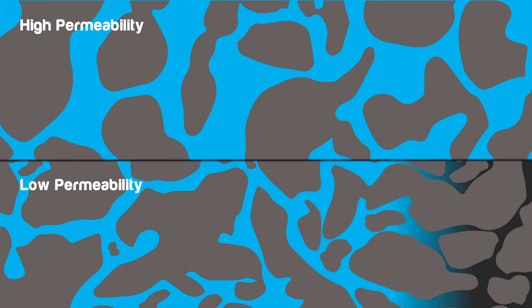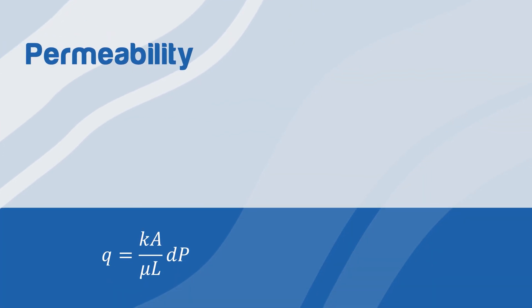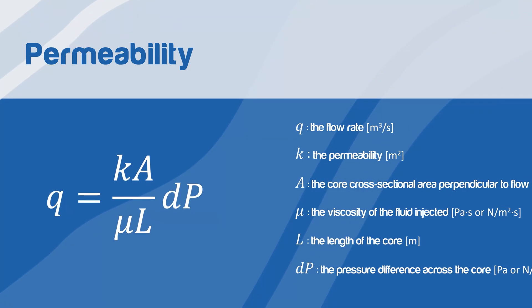Permeability is considered as a flow or transport property that helps in understanding the flow in the reservoir. The concept of permeability was first introduced by Henry Darcy in 1856 when he performed an experiment on sand filtrates and analyzed the concept of permeability.